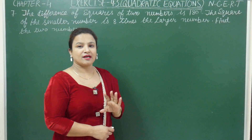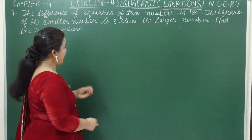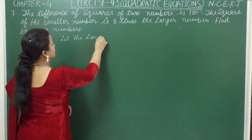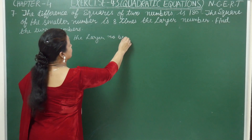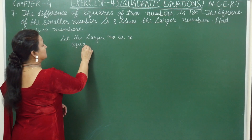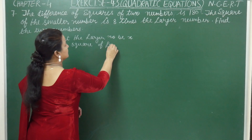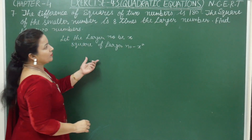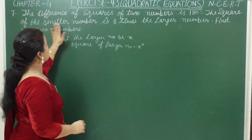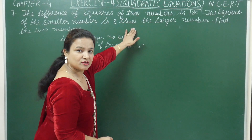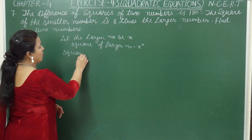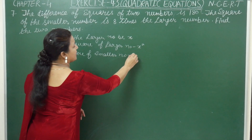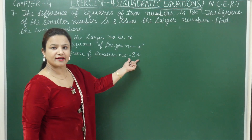We have to find out the two numbers. Let the larger number be x. The square of the larger number is x squared. We are given that the square of the smaller number is 8 times the larger number, so we can write the square of the smaller number as 8x.